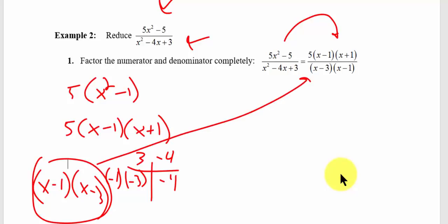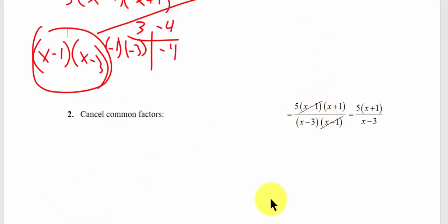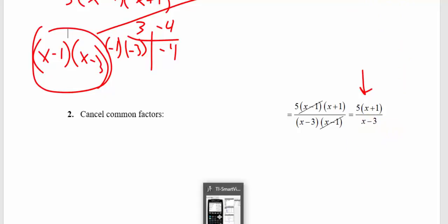Now that we've factored the numerator and the denominator, we can cancel our factors. I can cancel the x minus 1 and the x minus 1. We're going to be left with 5 times the quantity of x plus 1, divided by x minus 3. That would be my final answer.